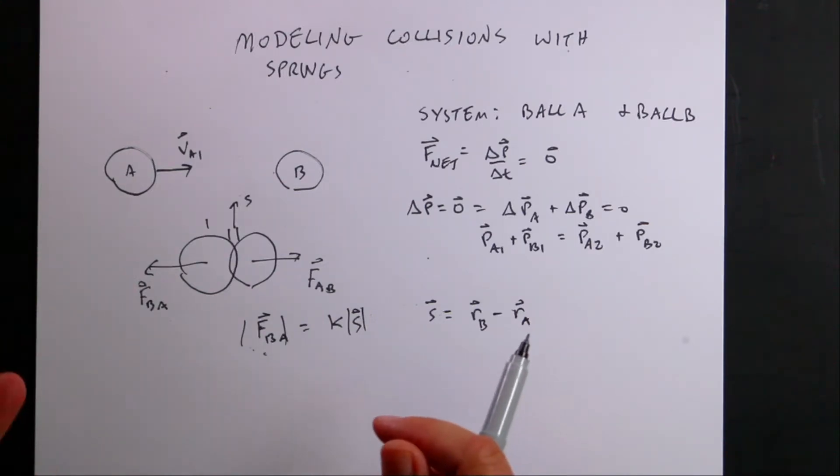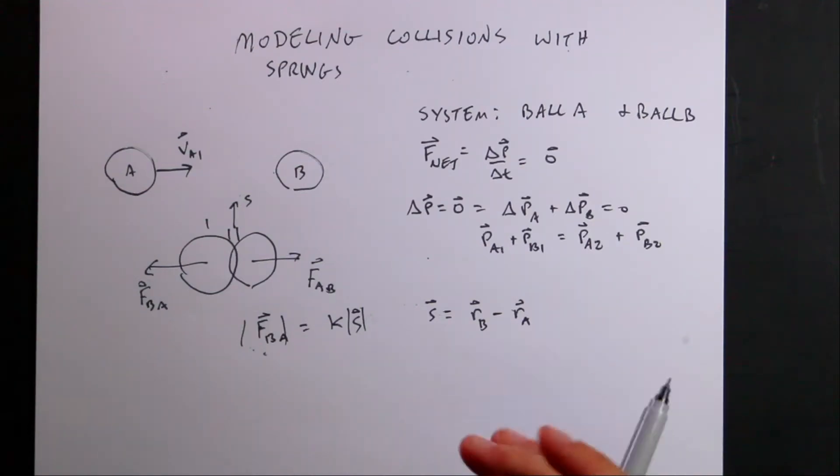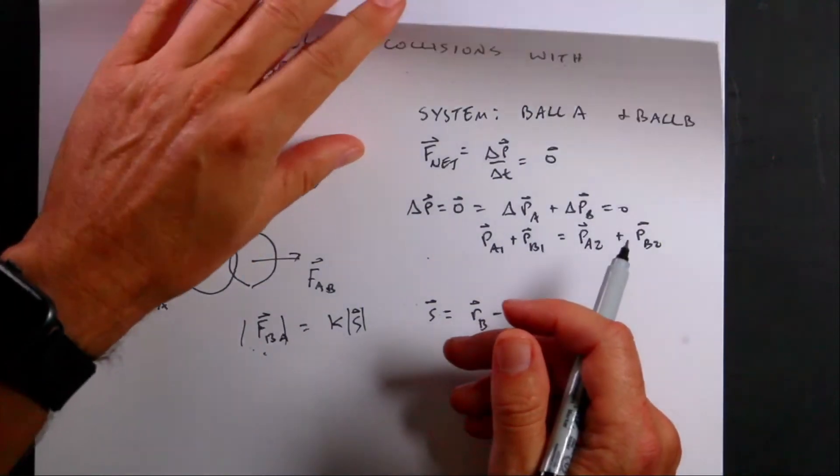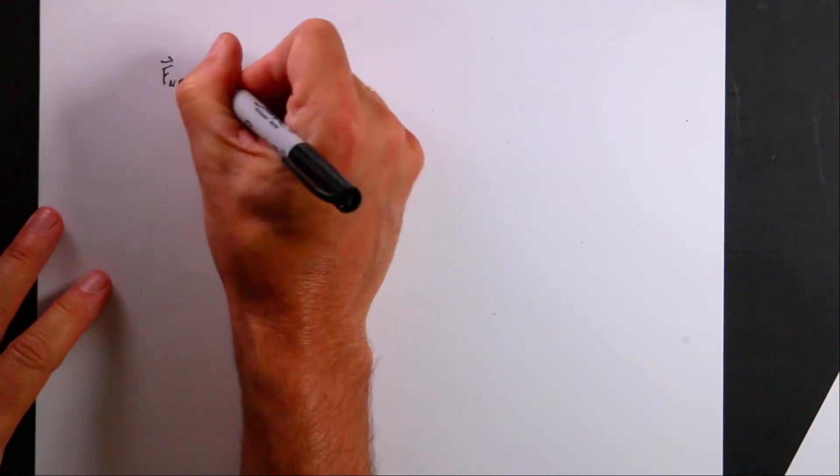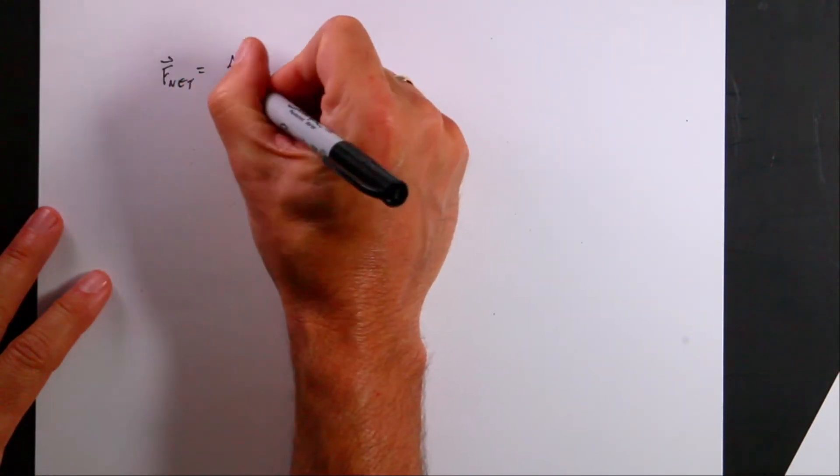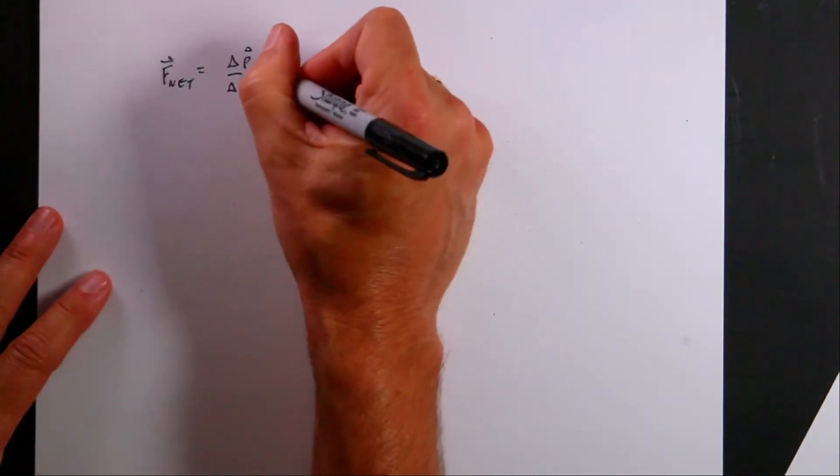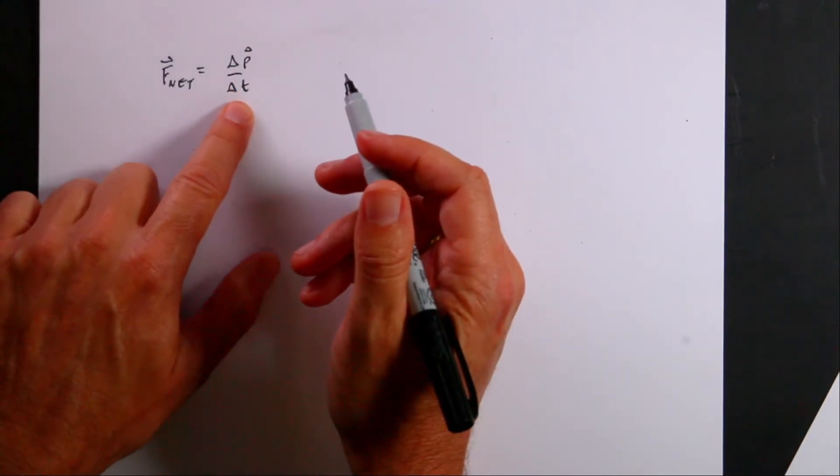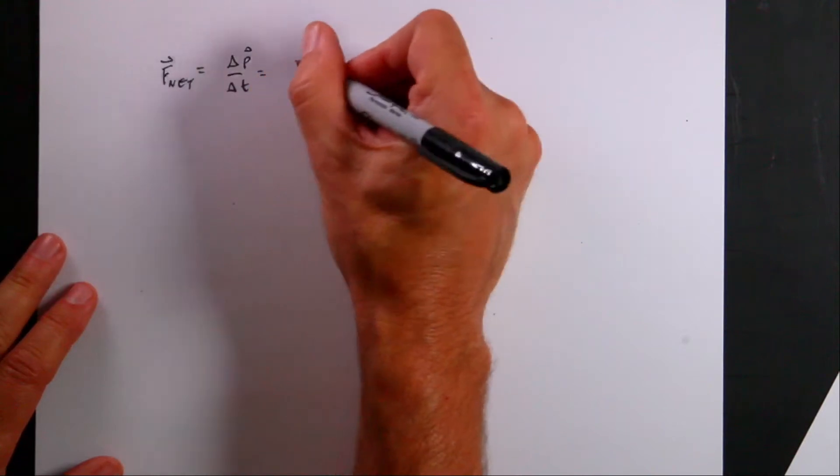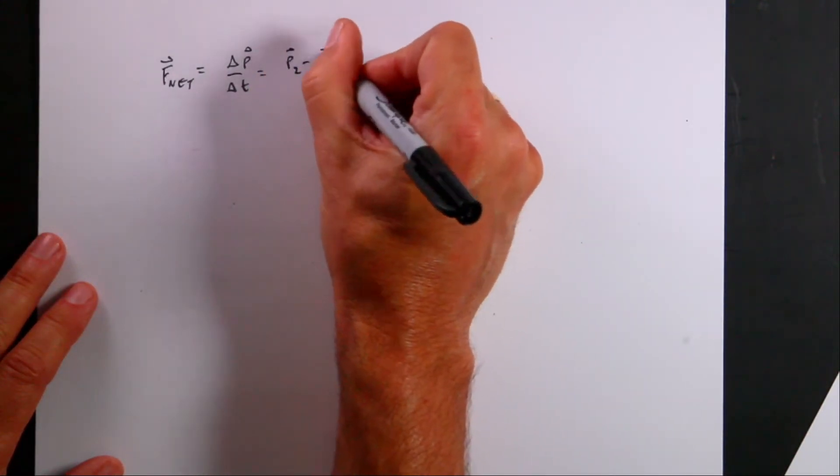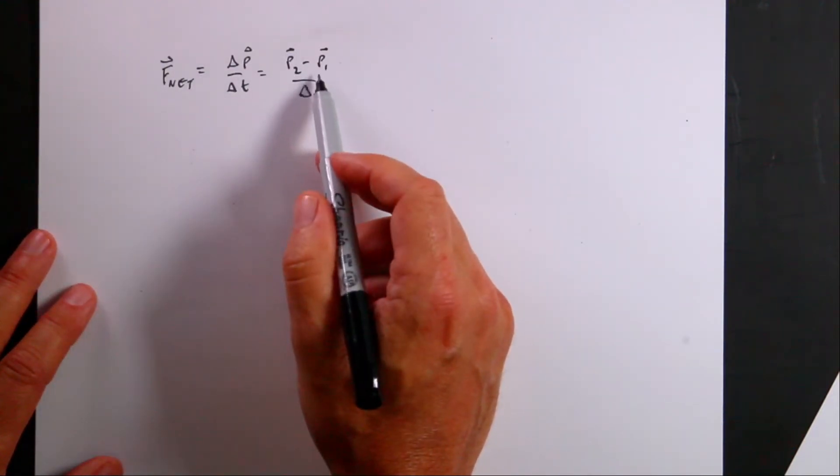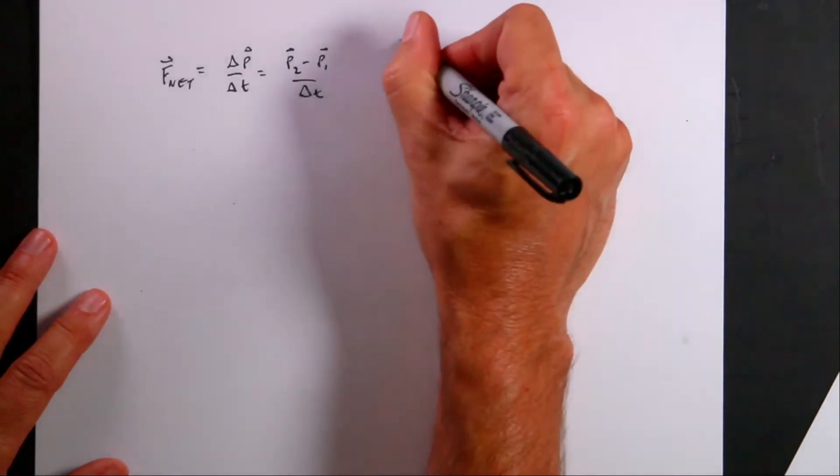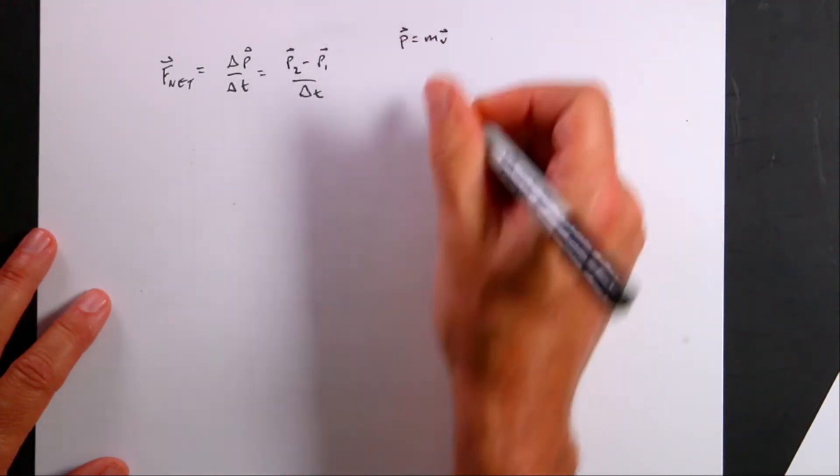First, I'm going to model the motion of a single ball by itself. And in that case, I can do a numerical calculation. So a numerical calculation says, let's start with the momentum principle. F net is the change in momentum over the change in time. And these are vectors. So if I break this into a small time step delta T, I can write this as P2 minus P1 over delta T.